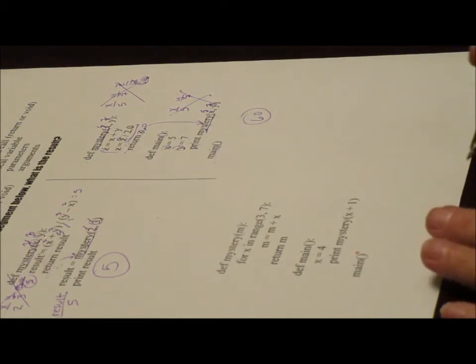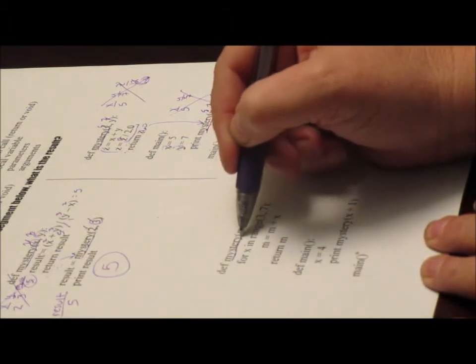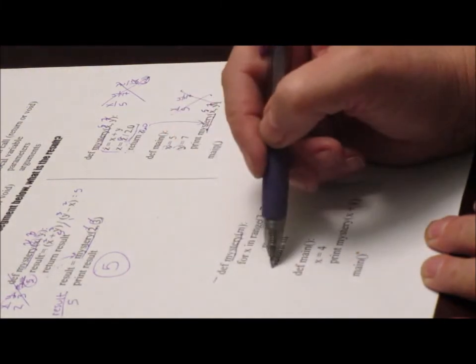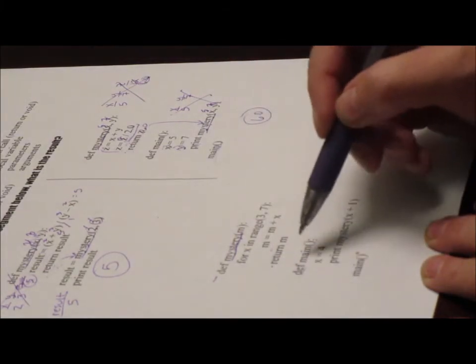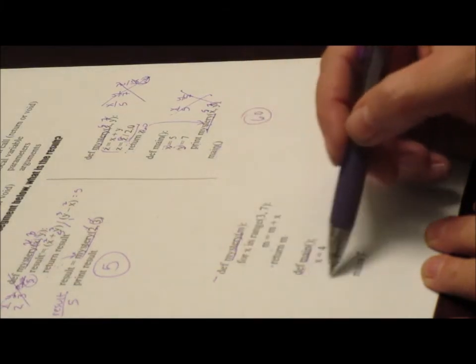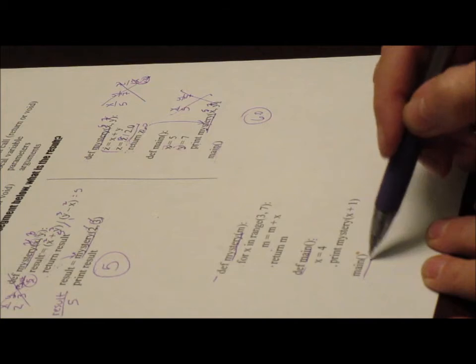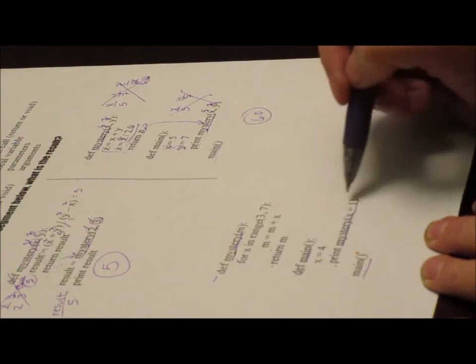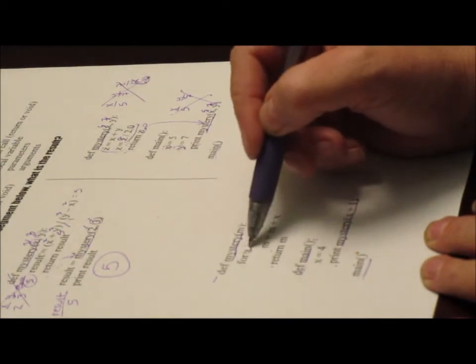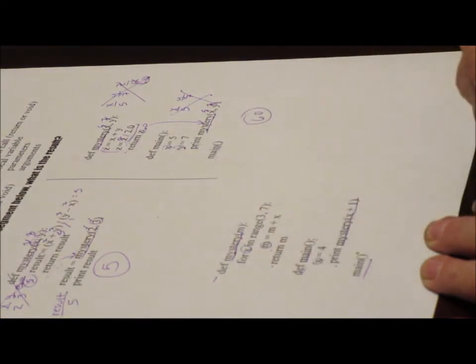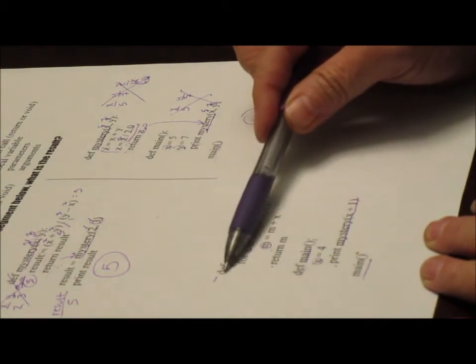For this third example, I wanted to include a for loop to give more practice with hand tracing. I've got function 'mystery' — a return function — with a function header and function body. There's also a void function (main) with a void function call. The return function call appears in a statement. Local variables include X and M in mystery, and X in main.